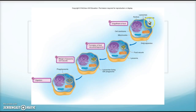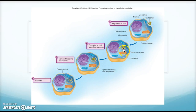Starting from the top: a food particle that a cell encounters gets engulfed into the cell and forms a vacuole or phagosome. It then bonds with a lysosome and when they fuse, the enzymes in the lysosome begin to digest the food. That's how digestion works in the eukaryotic cell.